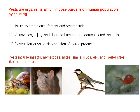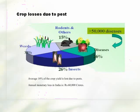Pests are organisms which impose burdens on human populations by causing injury to crop plants, forest, or ornamental crops, and cause injury and death to human beings and domesticated animals. Pest also results in depreciation of stored products like furniture or stored grain. Pests include insects, nematodes, mites, snails, slugs, vertebrates like rats and birds, and even wild elephants or wild deer are considered as pests. Regarding crop losses due to pests: 15% losses are caused by rodents, 26% by diseases, 26% by insects, and the remaining 33% by weeds. On average, about 18% of crops are lost due to pests.